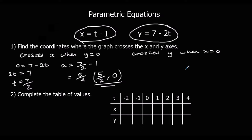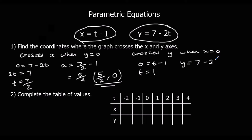It crosses the y-axis when x equals 0. Substituting x equals 0 gives 0 equals t minus 1, so t equals 1. We then substitute t equals 1 into the y equation: y equals 7 minus 2, which is 5. So it crosses the y-axis at (0, 5).